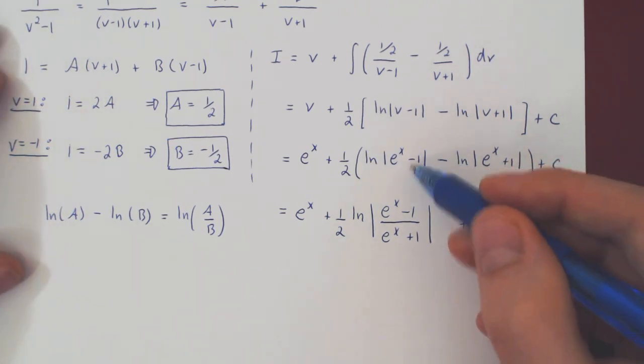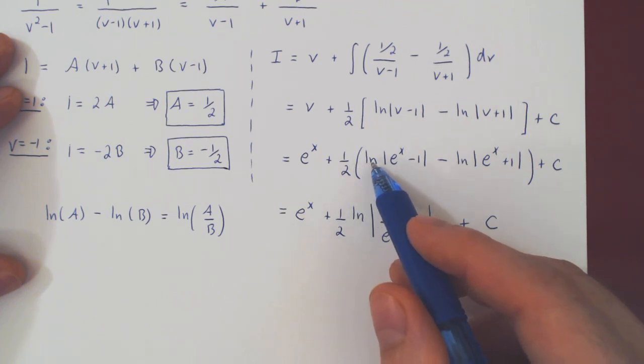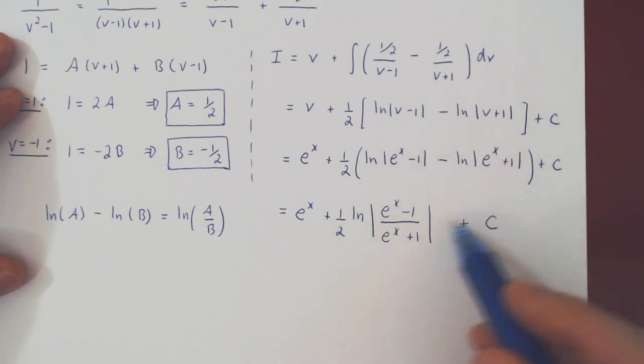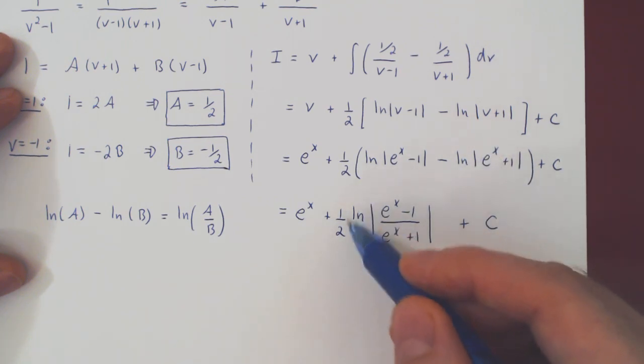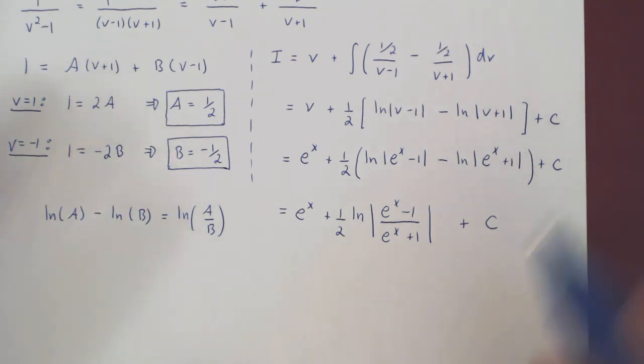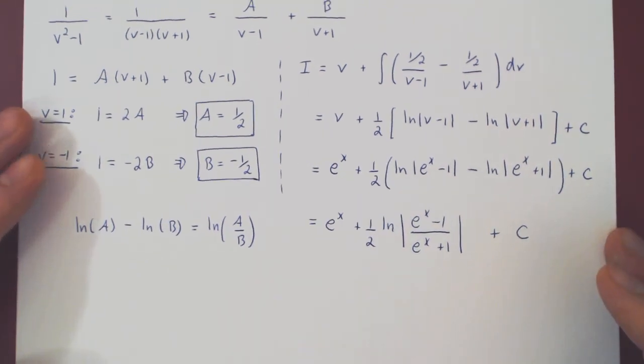And both are equally good, right? In the one hand, you have two logarithmic functions, but they both have a simpler argument. In the other hand, you have a single logarithmic function instead of two, but you have a slightly more complicated argument. Which one is better? I will let you be the judge of it.